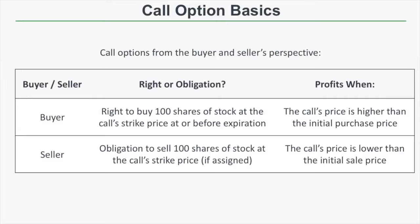From the seller's perspective, a call option represents the obligation to sell 100 shares of stock at the call strike price if they're assigned. A call seller profits when the call's price falls to a value lower than they sold it for. So if a call seller sells a call option for $5 and the option falls to $3, their profit on that position will be $200 — they sold an option worth $500 and bought it back for $300.